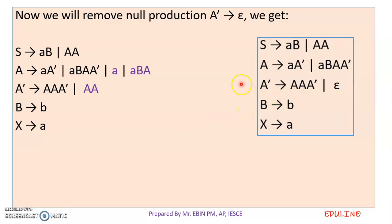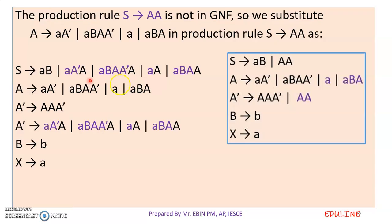By using epsilon production, we can remove the epsilon production. We can remove this null production. A' tends to epsilon. So A tends to A'. A' is equal to A'. In the first case, we have epsilon applied. A' is equal to A'. In the last A', we have the last A' — so that's the same. So A' is equal to A'. If we have E', finally we have the production rule.